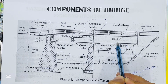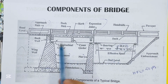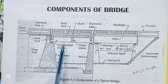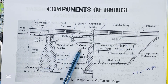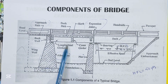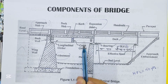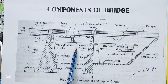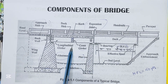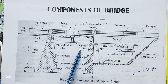Girder or beam is the part of the superstructure which bends along the span. This is cross girder — cross girders are usually connected to the main girders by bolting. Intermediate transverse rib stiffeners are provided at each cross girder connection.